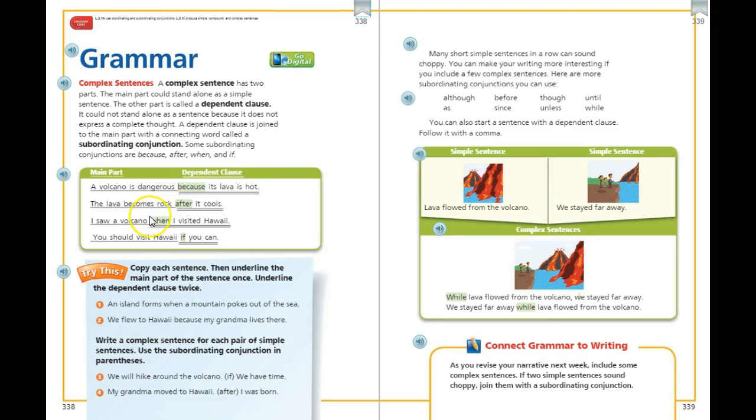You can look through the rest of these examples. You will see the main part, or the independent clause. And then the highlight is the subordinating conjunction. And the double underline is showing you the dependent clause.